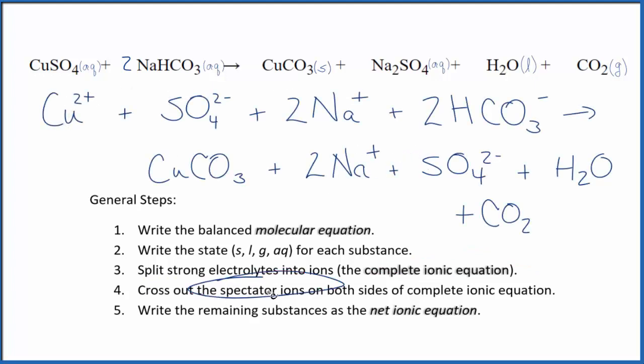Now we can cross out spectator ions. They're on both sides - we have our reactants and then our products. In the reactants, I can see there's a sulfate ion right here and in the products. Those are spectator ions, so cross them out. Two sodium ions, again in the products - cross them out.